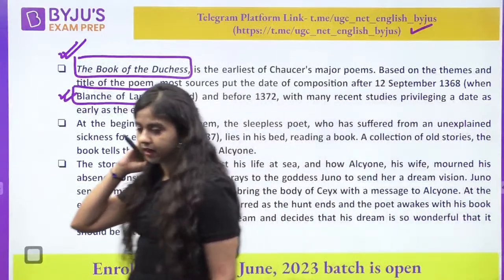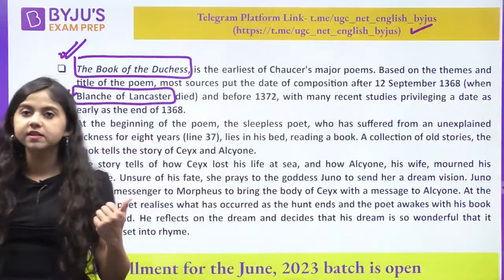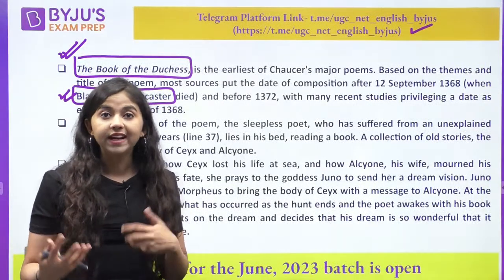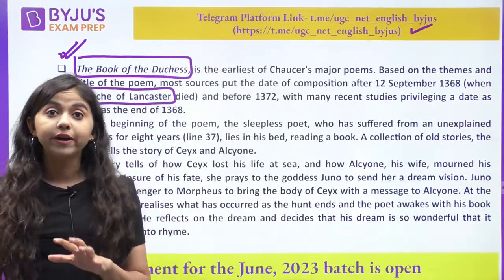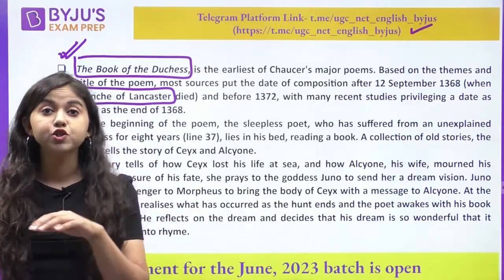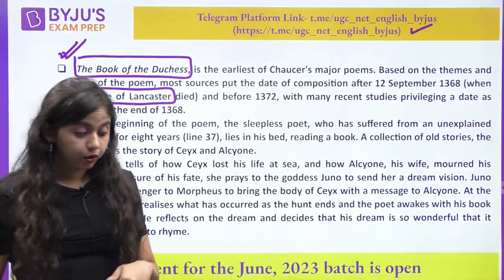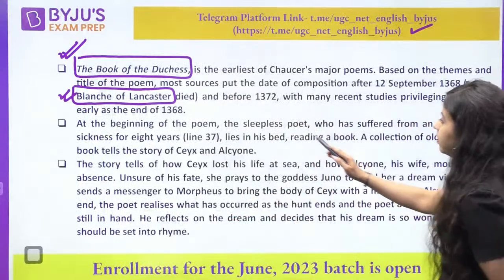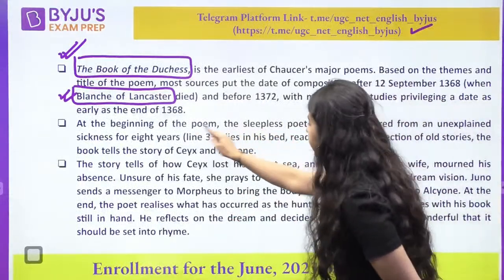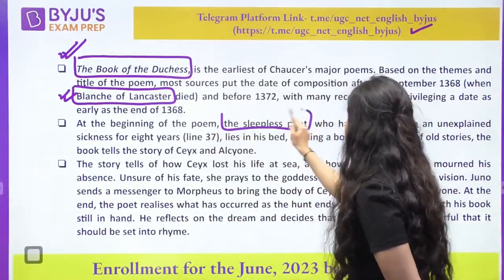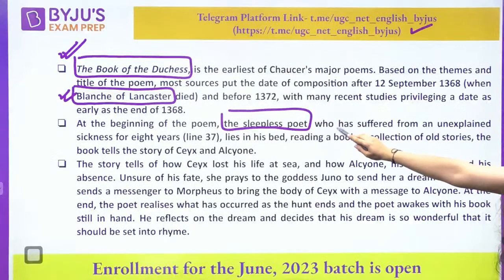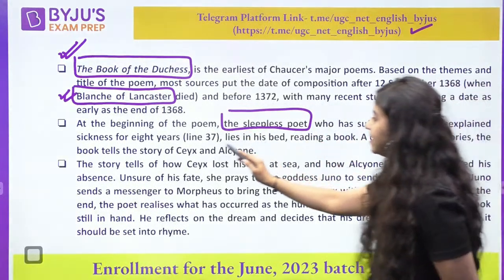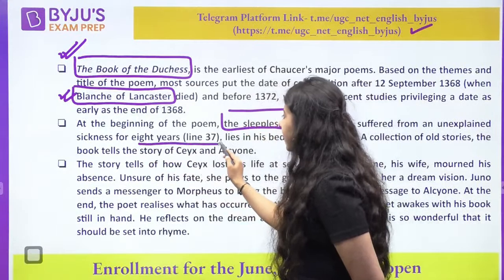Today's question — I think I have not included Poet Laureates in this deck — but we were talking about how John Dryden was the first officially appointed Poet Laureate, the first royal historiographer. All these pointers should be kept in mind. At the beginning of the poem, there is a sleepless poet who has suffered from this sickness for eight years. He is reading a book which tells you the story of Ceyx and Alcyone.